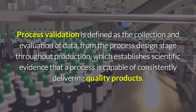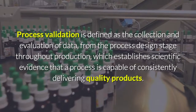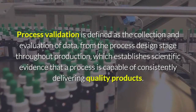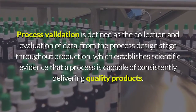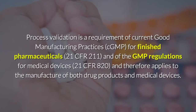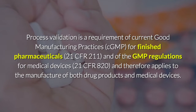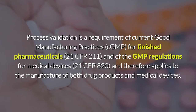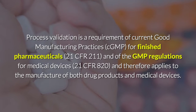Process validation is defined as the collection and evaluation of data from the process design stage throughout production, which establishes scientific evidence that a process is capable of consistently delivering quality products. Process validation is a requirement of current good manufacturing practices (cGMP) for finished pharmaceuticals, 21 CFR 211, and of the GMP regulations for medical devices, 21 CFR 820.